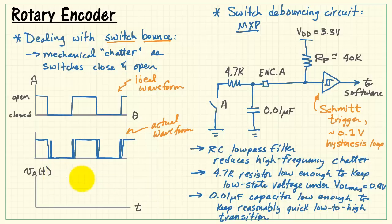If we look at the actual analog waveform being presented to the encoder input, I'll call that V sub A of T, when the switch first closes, then we are doing a transition from high to low, 3.3 volts heading towards ground,